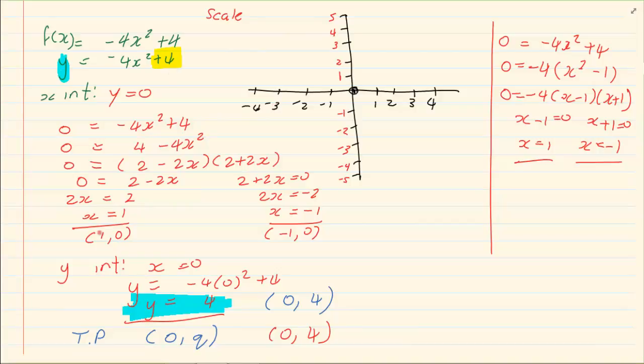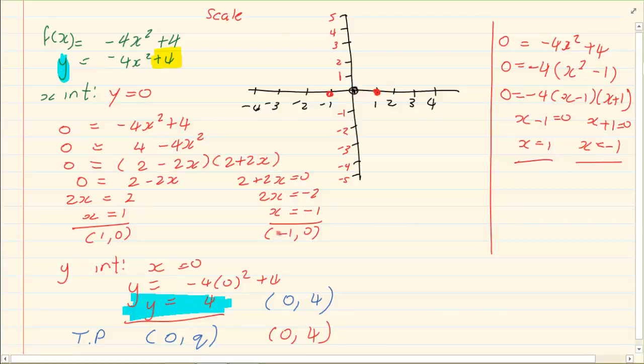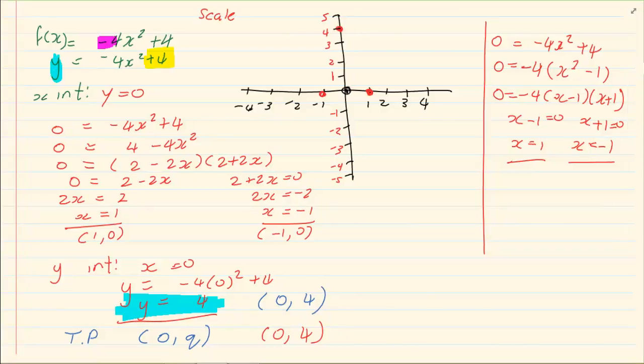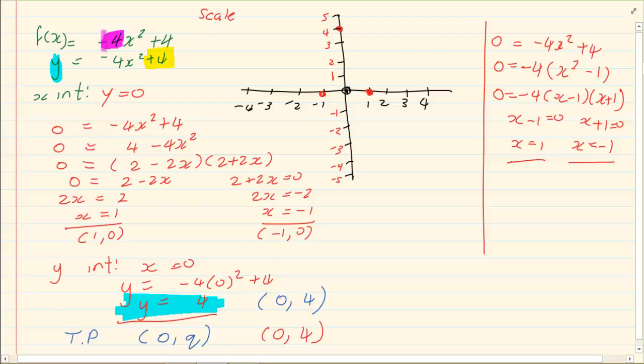Now how do we plot it? 1 and 0, minus 1 and 0. Then we've got 0 and 4. We know that it is a negative a, which means it's a sad face. So here's our sad face, and then it's a matter of joining the dots. And you've got your graph.